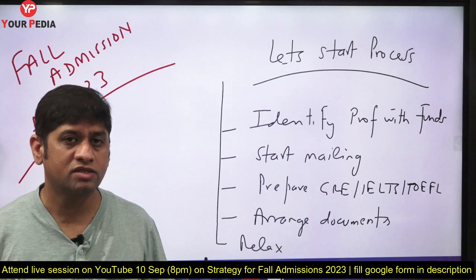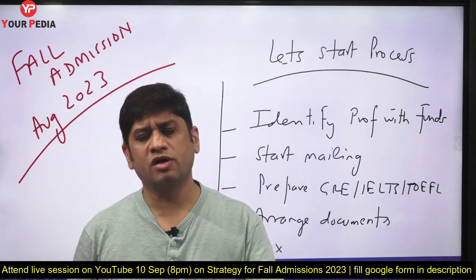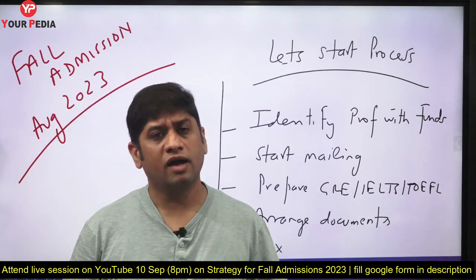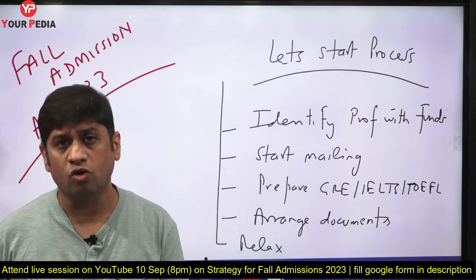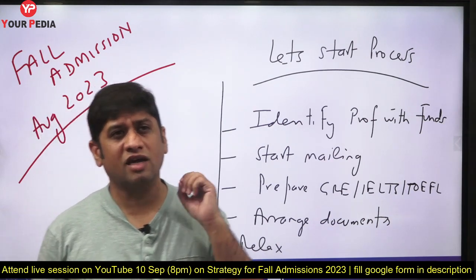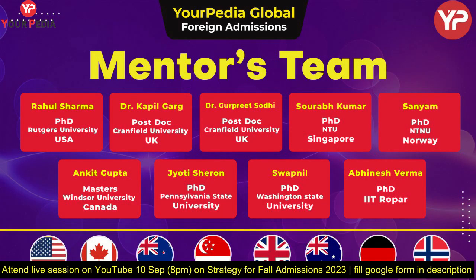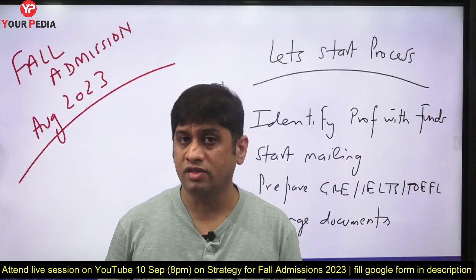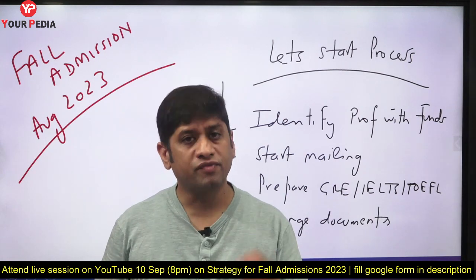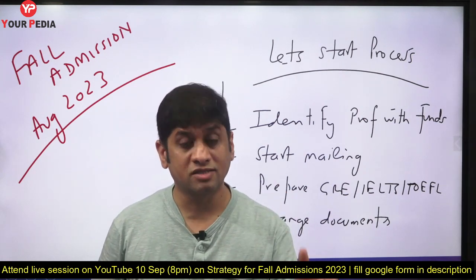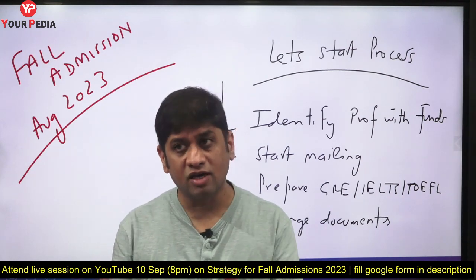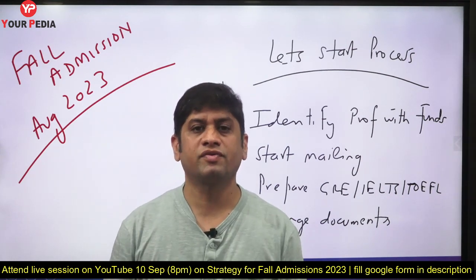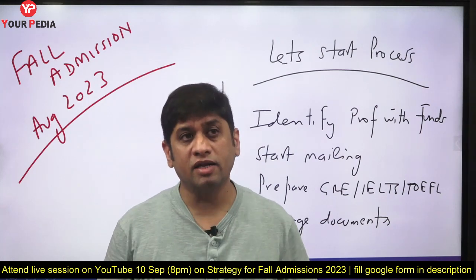We need to do smart work. Even in MS, if there is a project with a professor, he can give you a scholarship from that as well. So the first step is to identify professors who are sitting with funds — whether for MS, PhD, or direct PhD. A professor with a funded project will give you money if you want to work under his guidance, and they are looking for candidates like you. Mentors of Your PDA will tell you which professors to approach.